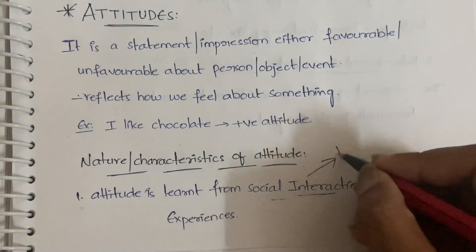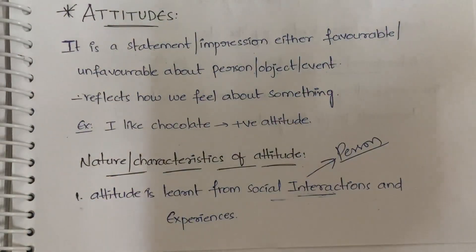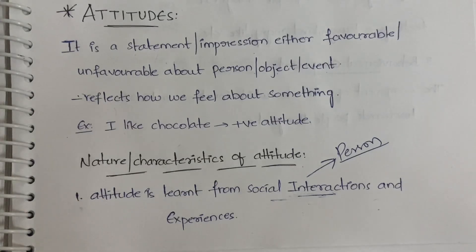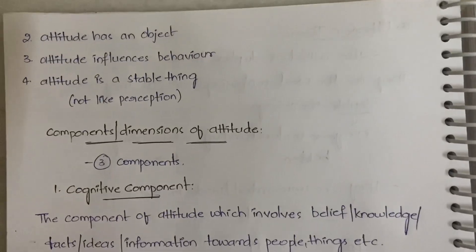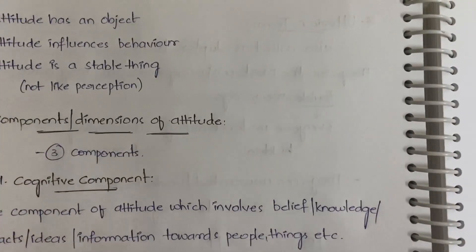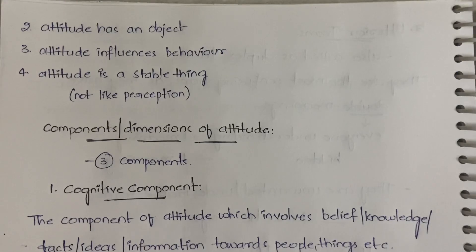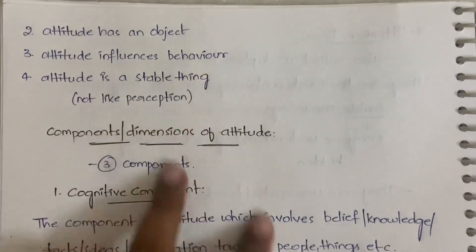You learn attitude from social interactions and experiences. For example, you have a friend, relative, or cousin — you like or dislike that person based on how you interact with them, how they talk to you, and how they respond to you. Next: attitude has an object. You are forming an attitude towards something — a person, place, event, or thing. 'I like' has no meaning on its own; 'I like chocolate' has meaning — chocolate is the object. Attitude also influences behavior.